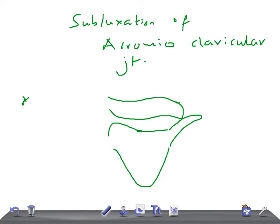If there is a subluxation or dislocation of the acromioclavicular joint, then we call it as such. If there's any injury to this, it leads to subluxation or dislocation of the acromioclavicular joint.